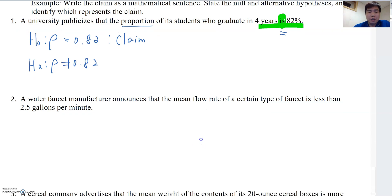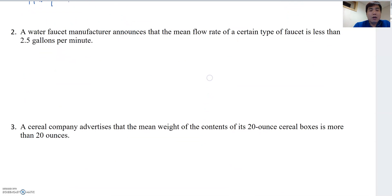Then look at number two here. A water faucet manufacturer announced the mean flow rate of a certain type of faucet is less than 2.5 gallons per minute. The same situation. We need to see whether this statement includes inequality threads. If it is, then it will be one-tail test.